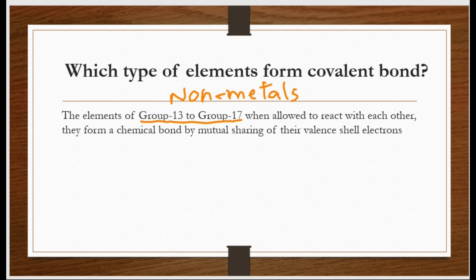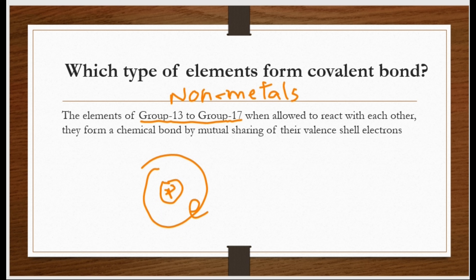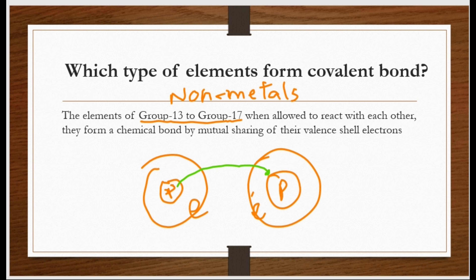Jab bhi koi atom doosre atom ke nazdeek aata hai — for example, hum hydrogen ki baat karte hain. Center mein uske nucleus hai, mean positively charged center hai, aur doosre hydrogen ke bhi same hai. Dono ke valence shell mein ek ek electron hai. Ab is hydrogen ka nucleus doosre ke nucleus ko repel karega, aur electron doosre ke electron ko repel karenge. Usi time mein, ek ka nucleus doosre ke electron ko attract karega, aur iska nucleus doosre ke electron ko attract karega.